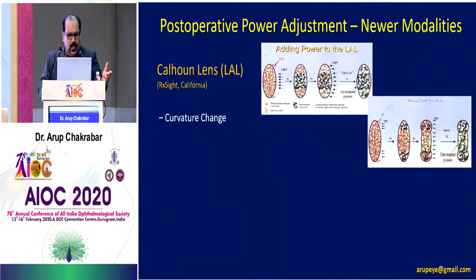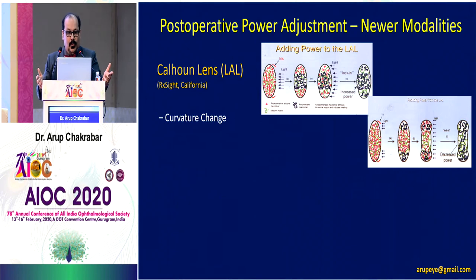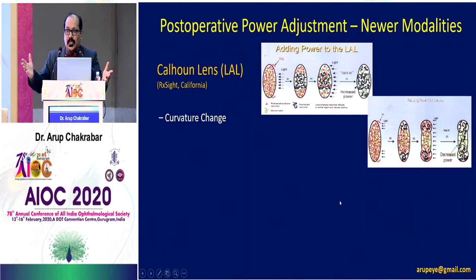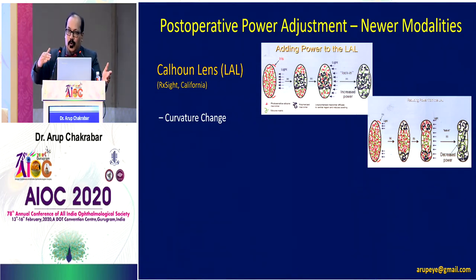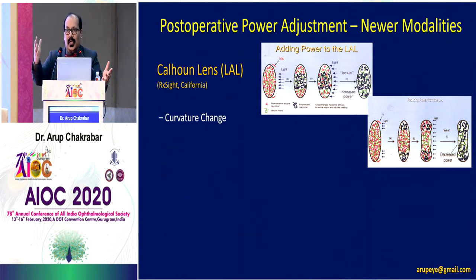I'll mention two new technologies. The first is the light adjustable lens, made of silicone, commercialized in 2019 at the American Academy meeting. Postoperatively, if there is any refractive surprise, these lenses can be irradiated to change the power — made more myopic or more hyperopic — and this can be done two or three times. Once you have achieved your desired refractive outcome, a final irradiation locks the lens power in place by bringing about changes in the curvature of the anterior surface.